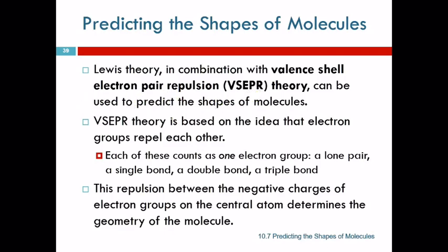This theory is based on the idea that electron groups repel each other. Repulsion. Electron pair repulsion. So, the electron pairs are repelling each other.